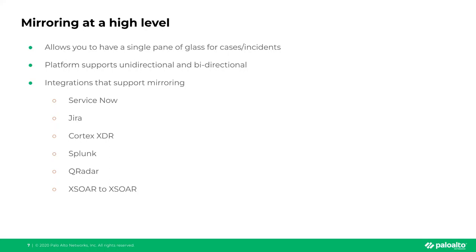So you don't have to worry about things getting out of sync or team members who only have access to ServiceNow not being able to share information. The bidirectional and unidirectional piece depends on what your organization needs. Sometimes you just want to receive information from ServiceNow without pushing back, or vice versa — just push from XSOAR to ServiceNow or Jira. It depends on your organizational requirements.